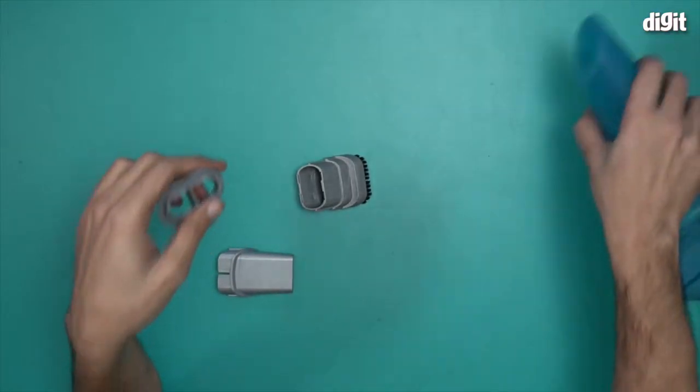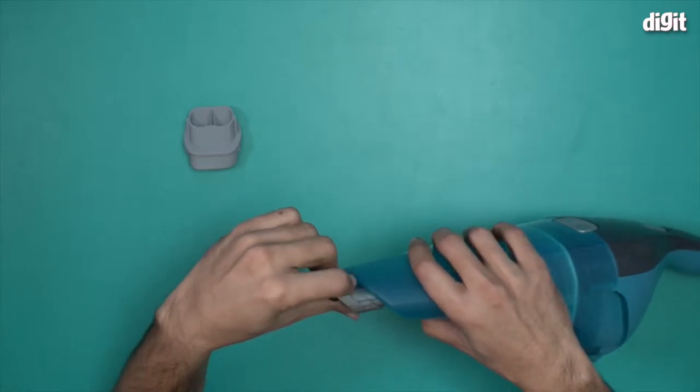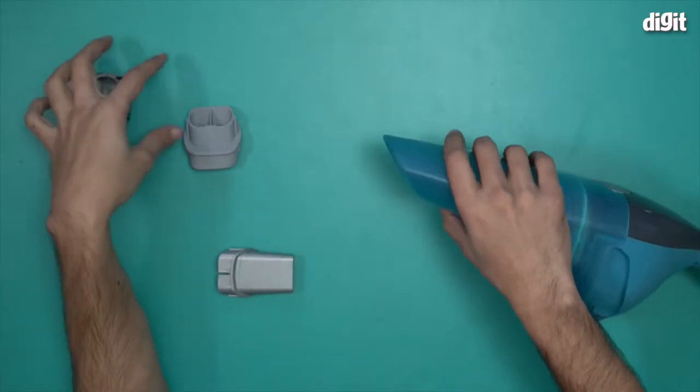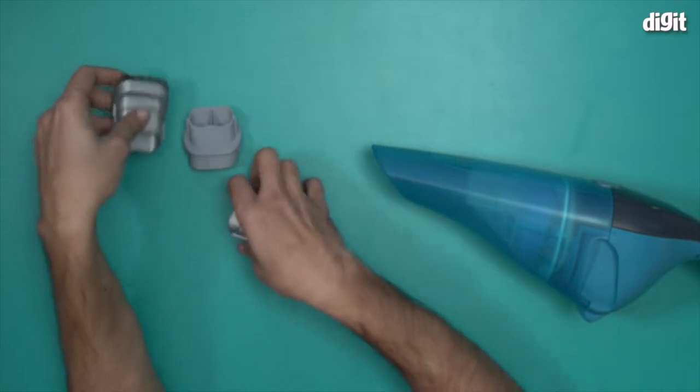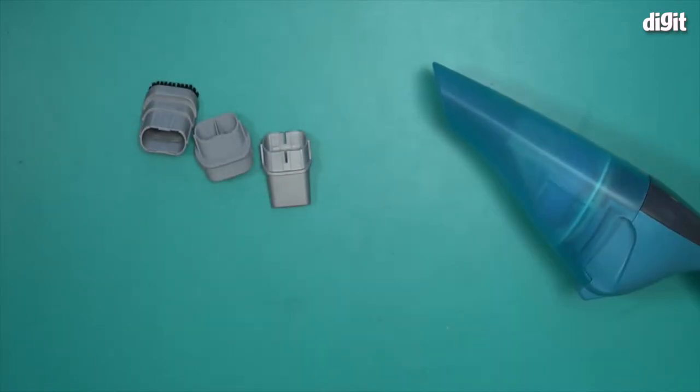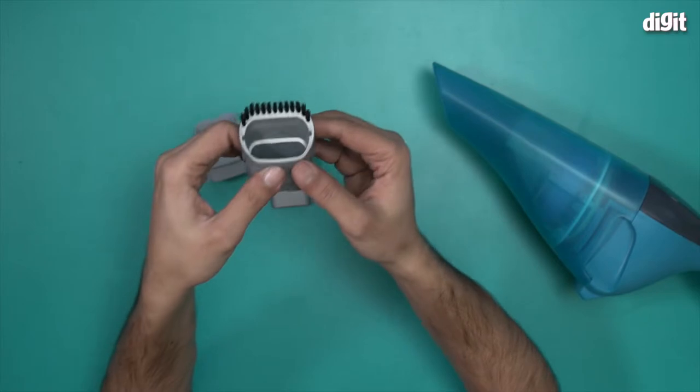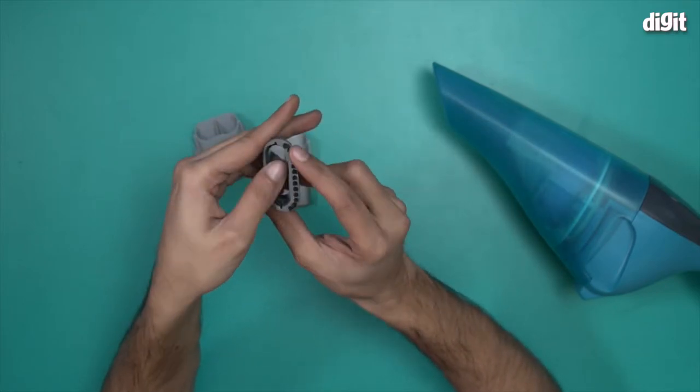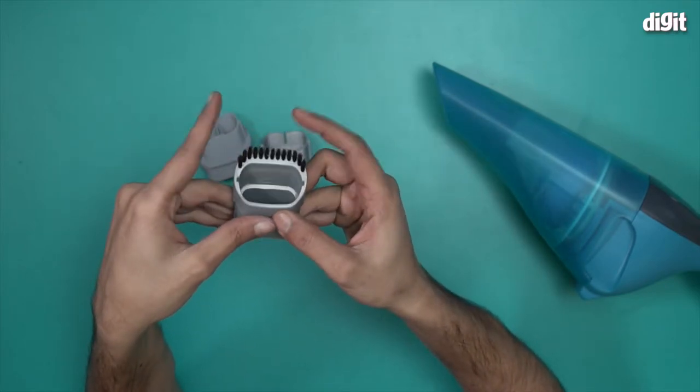There are three attachments. Let me tell you what they are. You have three attachments here. This is the brush tool, as you can see - there are bristles over here that you'll use to clean fabric surfaces.